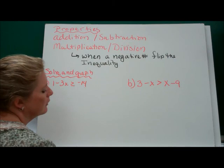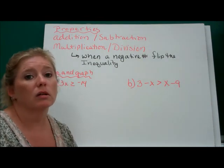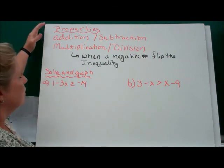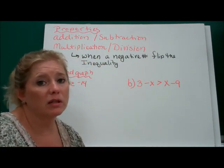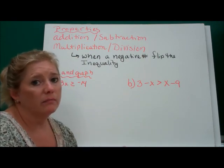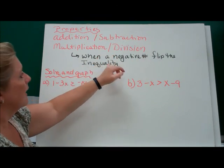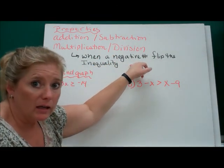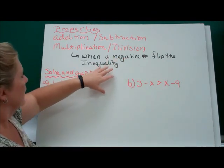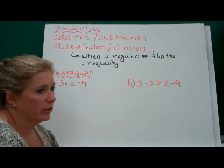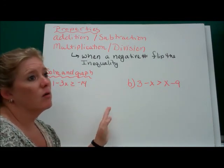Properties of inequalities: they have the same basic properties as equations, but there's one little difference. When you add and subtract, you add and subtract to both sides — that's fine. You can also multiply and divide by a positive number and everything is okay. However, when you multiply or divide by a negative number, you are going to have to flip the inequality symbol — turn it over. If it was a less than, it becomes a greater than.